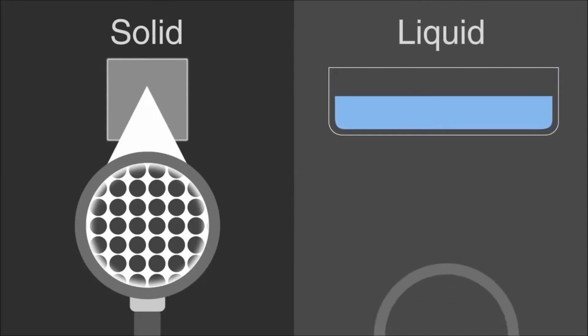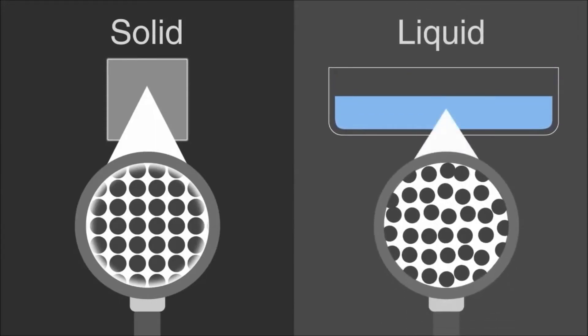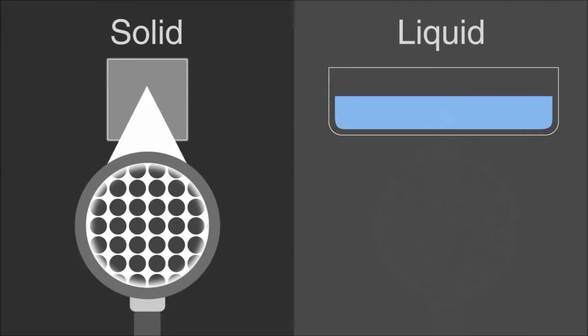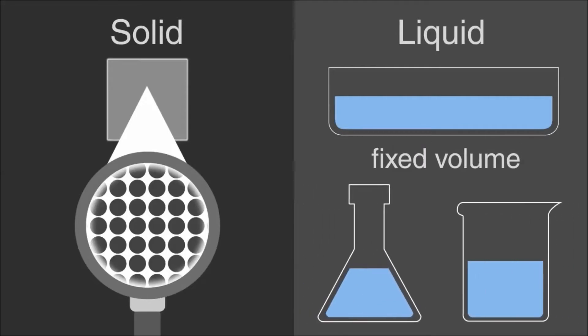The particles in a liquid are still touching one another and are able to move around each other. Therefore, a liquid still has a fixed volume, but it takes the shape of their container.